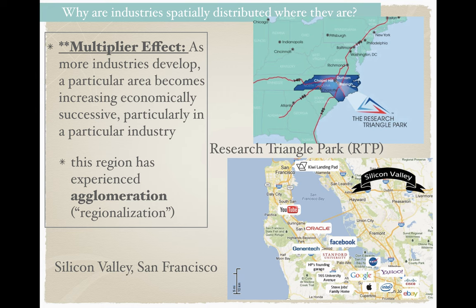As the actual definition states, as more industries develop, a particular area becomes increasingly economically successful, in particular in a specific industry. For example, Research Triangle Park in North Carolina — in Chapel Hill, Raleigh, Durham — we have an agglomeration of research industries, different types of academic research pursuits, and many businesses associated with the research of those areas. As more of those industries come, more of the resources that make those industries successful come, and the development and the agglomeration just takes off from there.